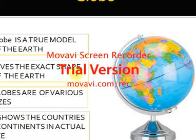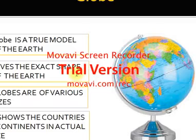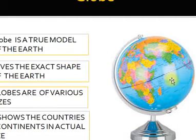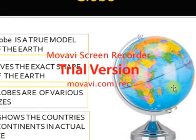This is the exact shape of the globe. If you use the globe, you can see the continents, countries, and oceans. You can see the exact size using the globe.